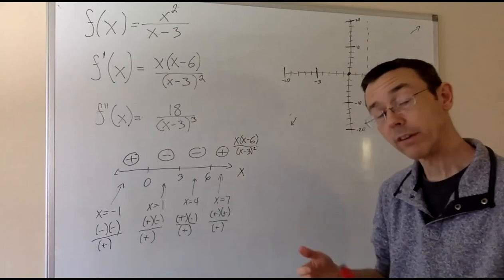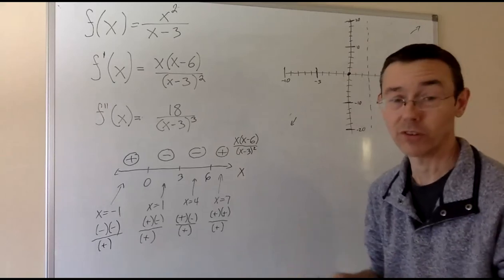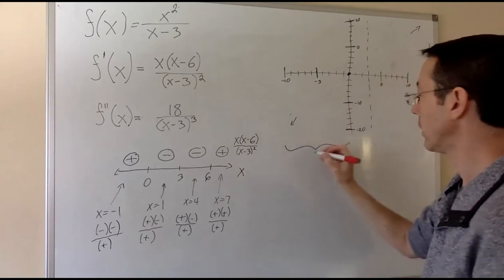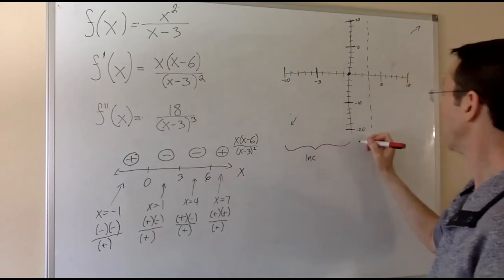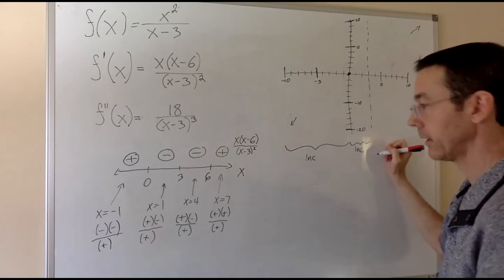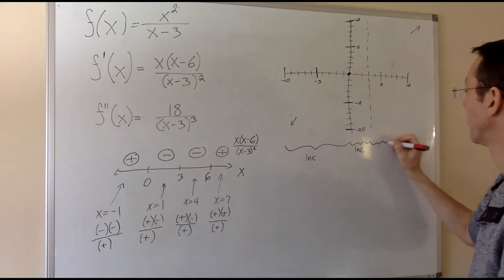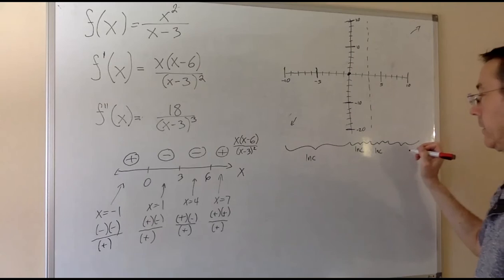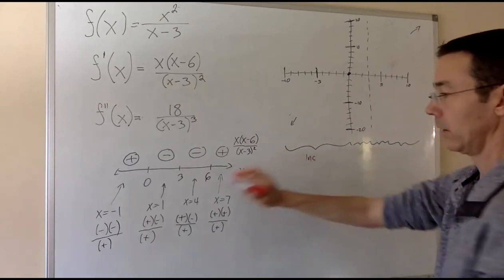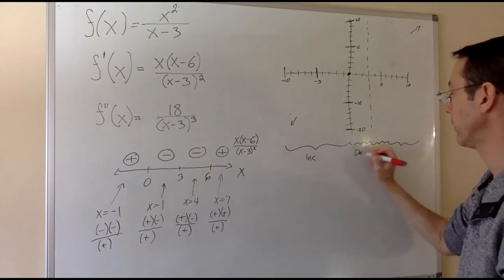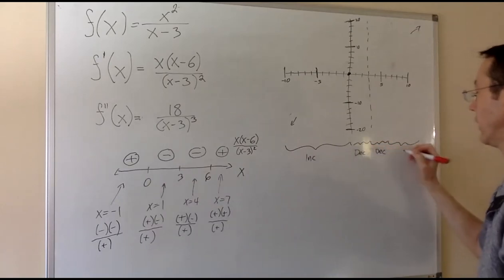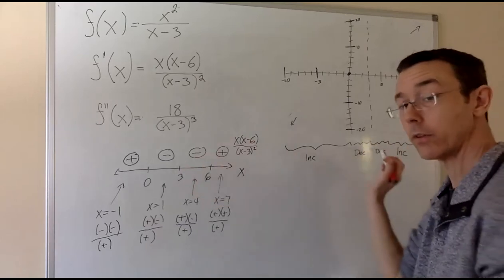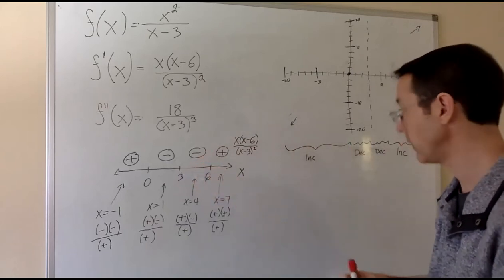So we now know where the derivative is positive and negative. That tells us where the function is increasing and decreasing. Let's label that over here. From negative infinity to 0, it's going to be increasing. From 0 to 3, decreasing. From 3 to 6, decreasing. And then from 6 to infinity, increasing. Increasing wherever the derivative is positive, decreasing wherever the derivative is negative.